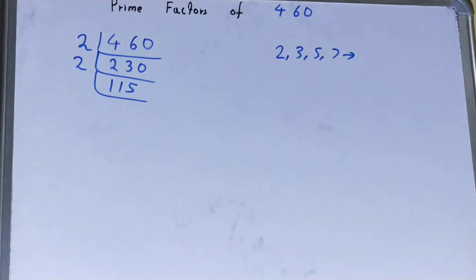Is this 115 divisible by 2? The answer is no, it is an odd number. So we'll go to the next lowest prime number that is 3. Is it divisible by 3? Let's check.